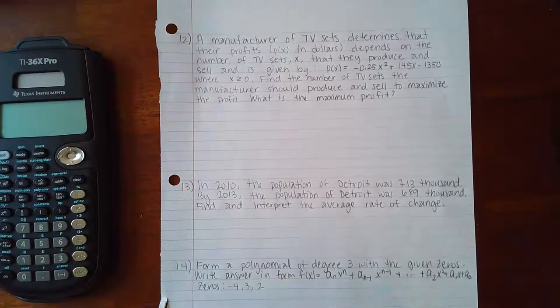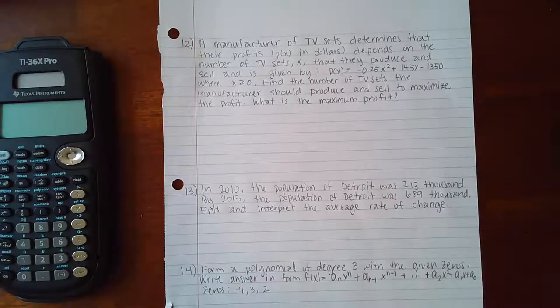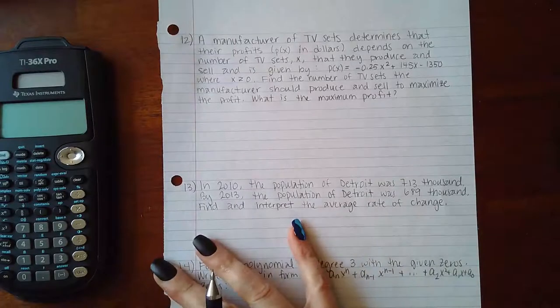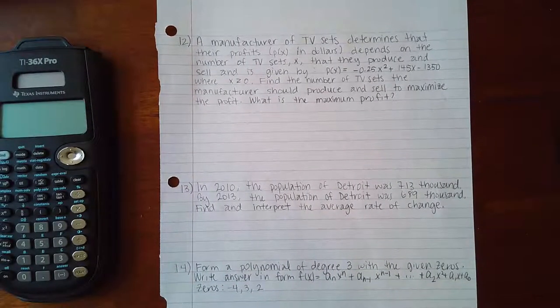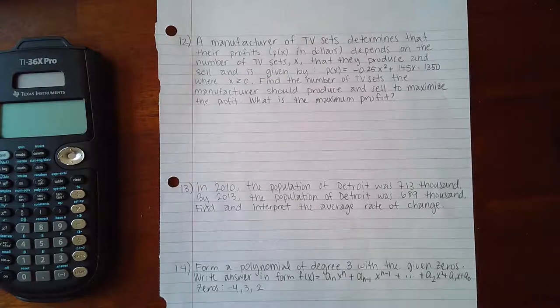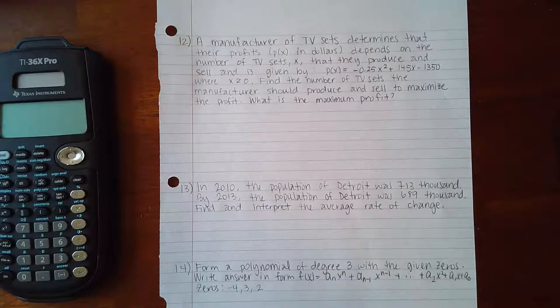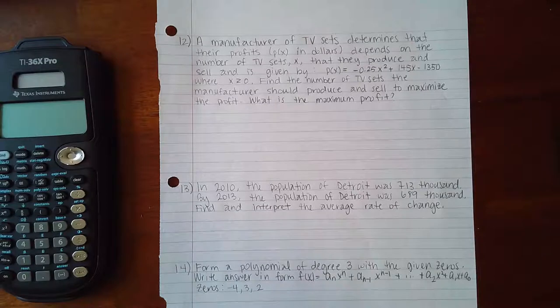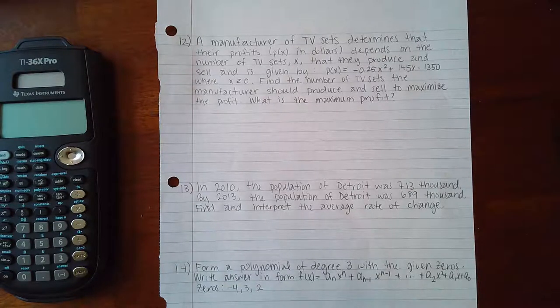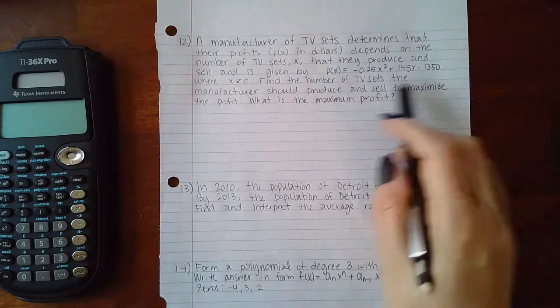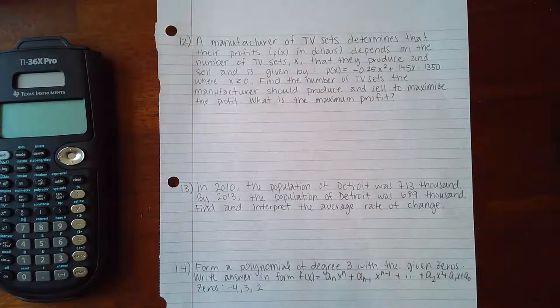Here we have problems 12 through 14. The first word problem says a manufacturer of TV sets determines that their profit P(x) depends on the number of TV sets x that they produce and sell, and is given by P(x) equals this equation, where x is greater than or equal to zero.